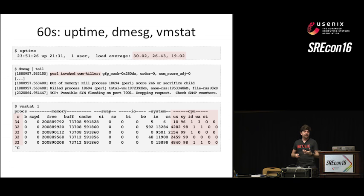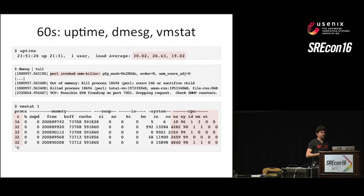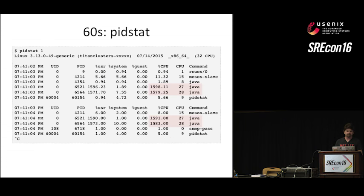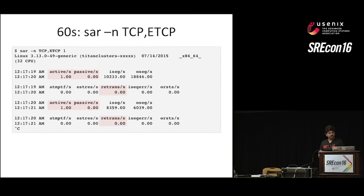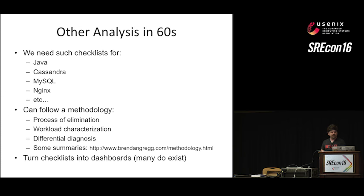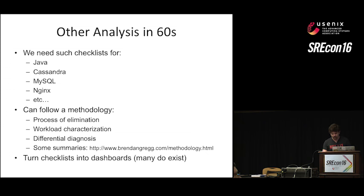Dmesg is always really helpful because sometimes the kernel will tell you it's unhappy and why — maybe it's been doing OOM killing. Other analysis we'd like to do in 60 seconds: Java, Cassandra, MySQL, Nginx, and so on. It would be great to have a performance analysis in 60 seconds checklist for all these different specialties.